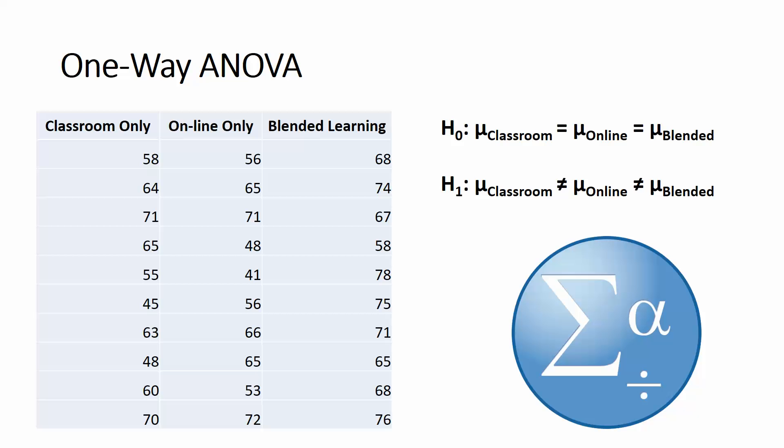I'm setting out my null and alternative hypotheses. My null hypothesis is that the mean of the classroom group is equal to the mean of the online group, which is equal to the mean of the blended group — in other words, that there's no difference between the means of the three groups. My alternative hypothesis H1 is that at least two of the means are different.